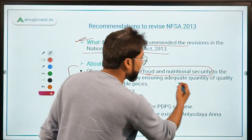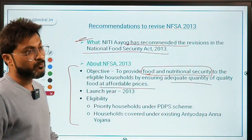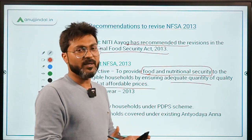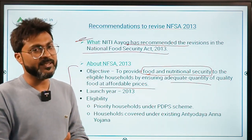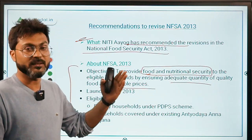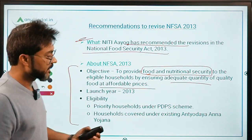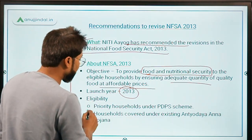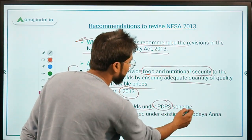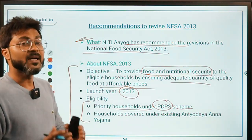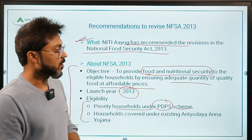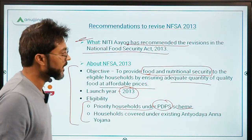The NFSA aims to ensure adequate quantity of quality food at affordable prices to all eligible households — that is the basic objective of this Act enacted in 2013. Remember, the eligible households include all priority households under the PDS system and all existing beneficiaries of Antyodaya Anna Yojana.